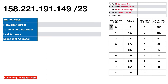Here's the next subnetting address. This one's a little tricky, because when we identify the interesting octet, see how high it is? It's 191. I'm going to show you a trick to quickly find the IP range for this address without having to write all the numbers out. The interesting octet is this one — we know it's a Class B and the default subnet mask is 255.255.something.something, so whatever octet doesn't have 255 is the one you focus on.